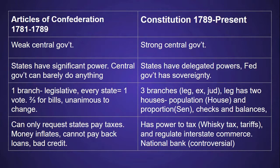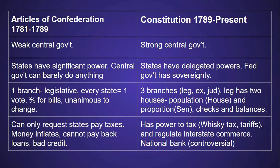A major problem under the Articles of Confederation was taxation and monetary issues. The government could only request states pay taxes and had no other way to collect revenue. This sent the United States credit and monetary system into a tailspin, as the U.S. owed debts to foreign countries from the Revolutionary War and could not pay them off. Under the Constitution, the government has much more ability to tax and also regulate trade, seen in the whiskey tax and tariffs under Hamilton's financial program in the 1790s. Also, the Constitution was more elastic because of the necessary and proper clause, allowing the government to do things not specifically stated in it, like have a national bank.